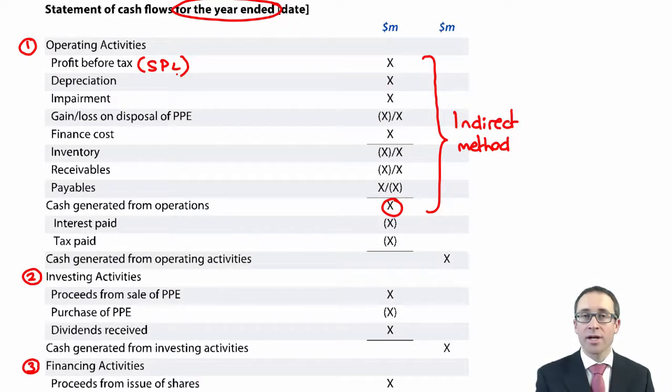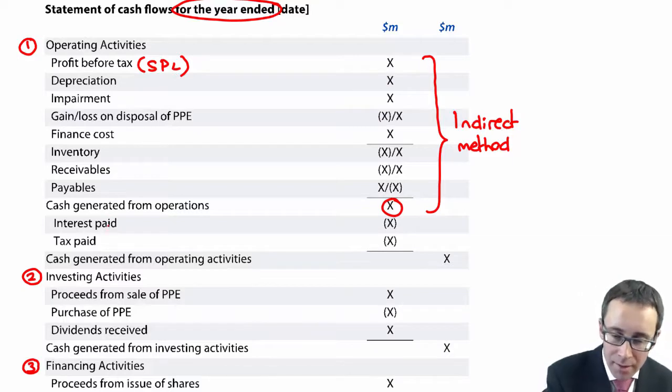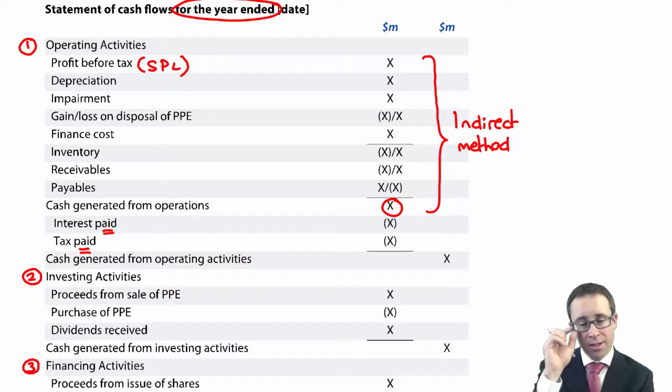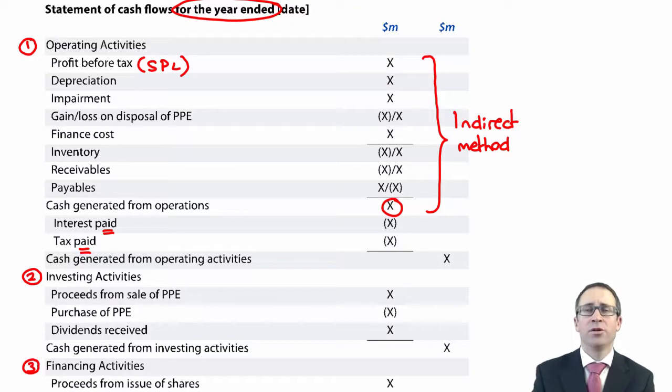You've then got your interest paid and tax paid. Again, remember, they are cash payments. So, they are outflows. It's not necessarily what the expense figure is within profit or loss. You need to adjust that based upon accruals, opening and closing to work out the cash figure. Again, if you see positive numbers, that's an inflow. If you see negative numbers, that's an outflow.